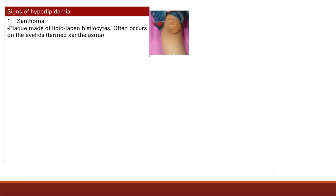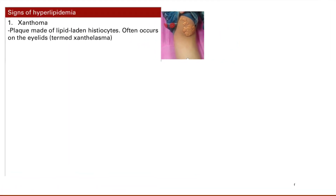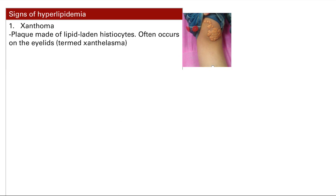Next are the signs of hyperlipidemia. Xanthomas showed up for pretty much all of those dyslipidemias — they are plaques made of lipid-laden histiocytes, basically large raised areas of the skin. You'll often see them on the eyelids, where they're called xanthelasma.